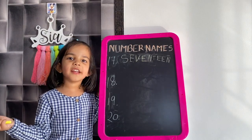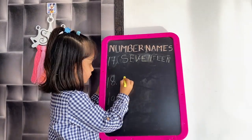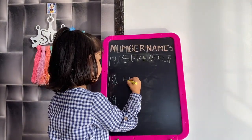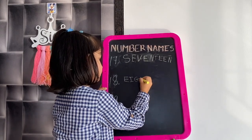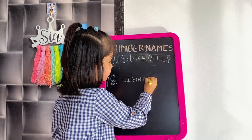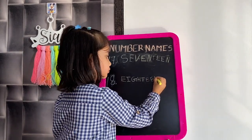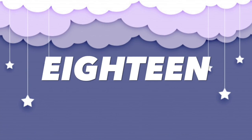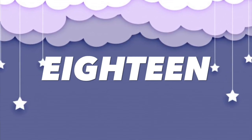Now I will write 18. E, I, G, H, T, E, E, N. 18.